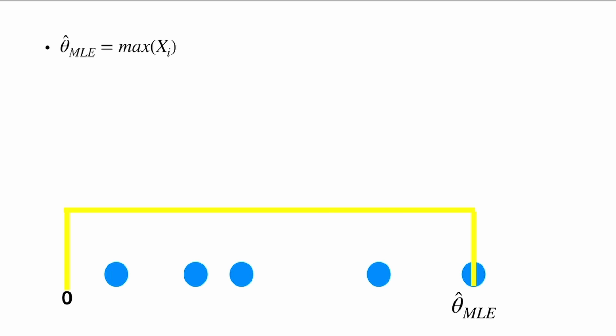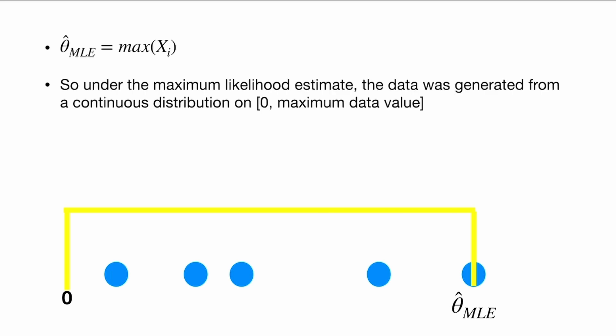Our MLE is the maximum value. Under the maximum likelihood estimate, we say that the data was generated from a continuous distribution between 0 and the maximum data value.